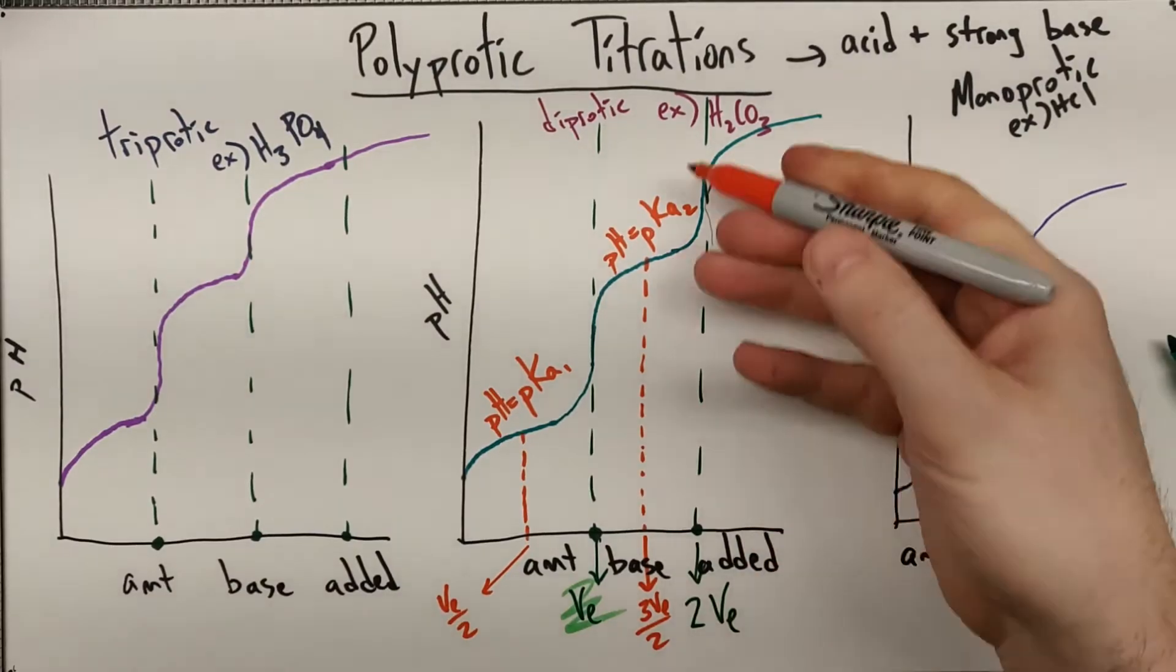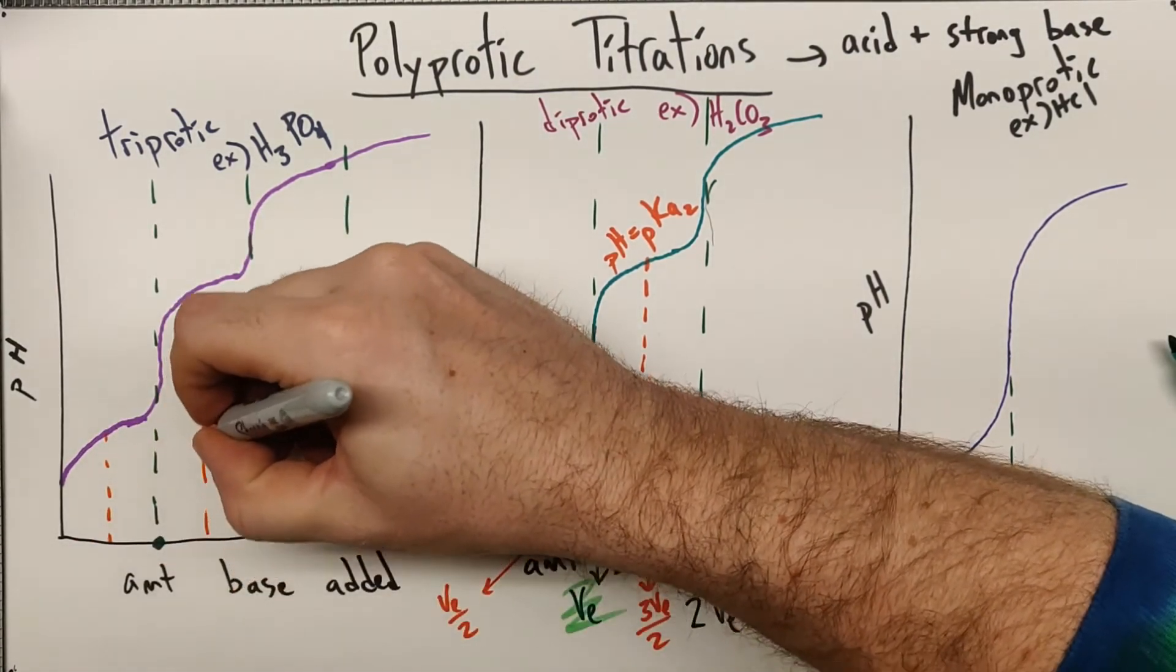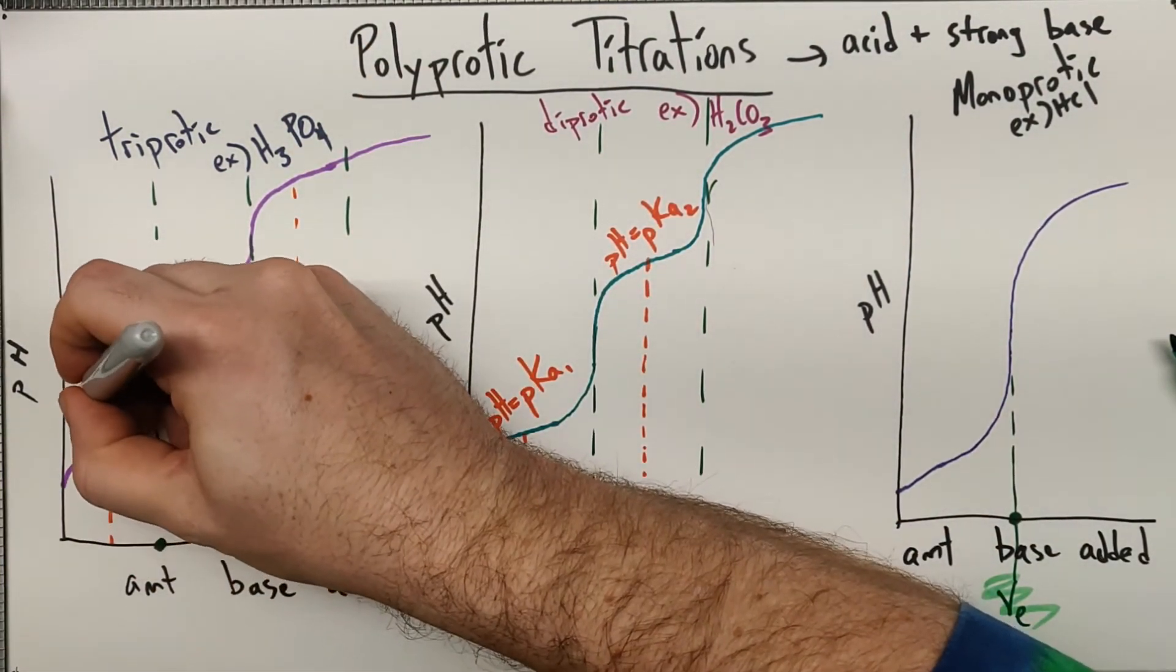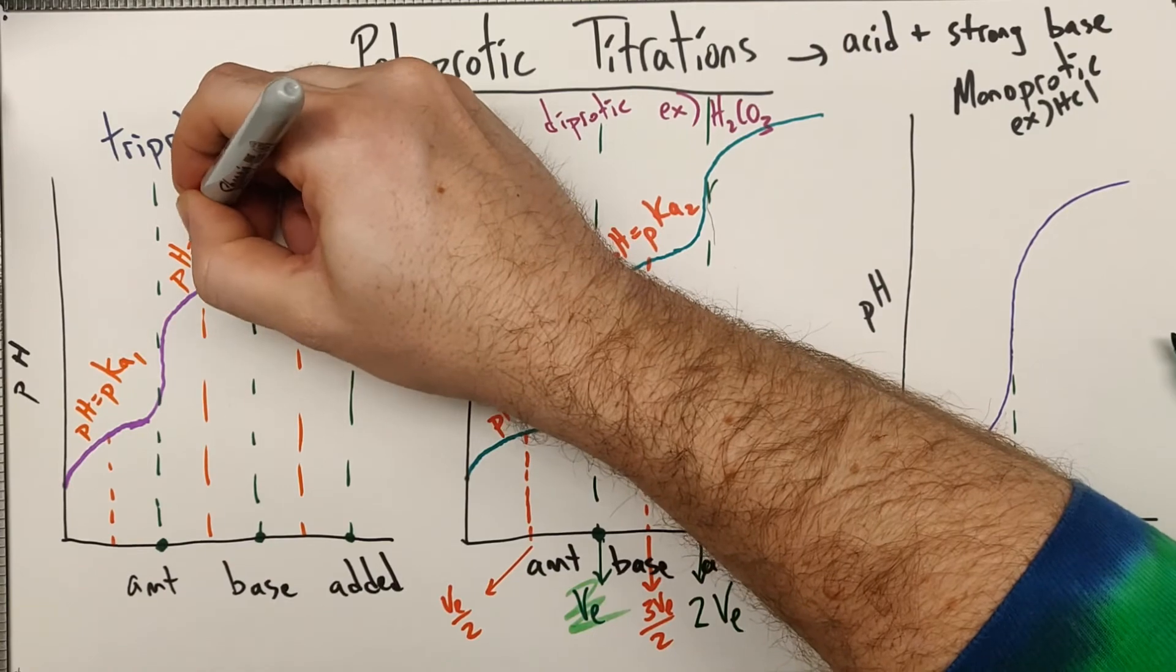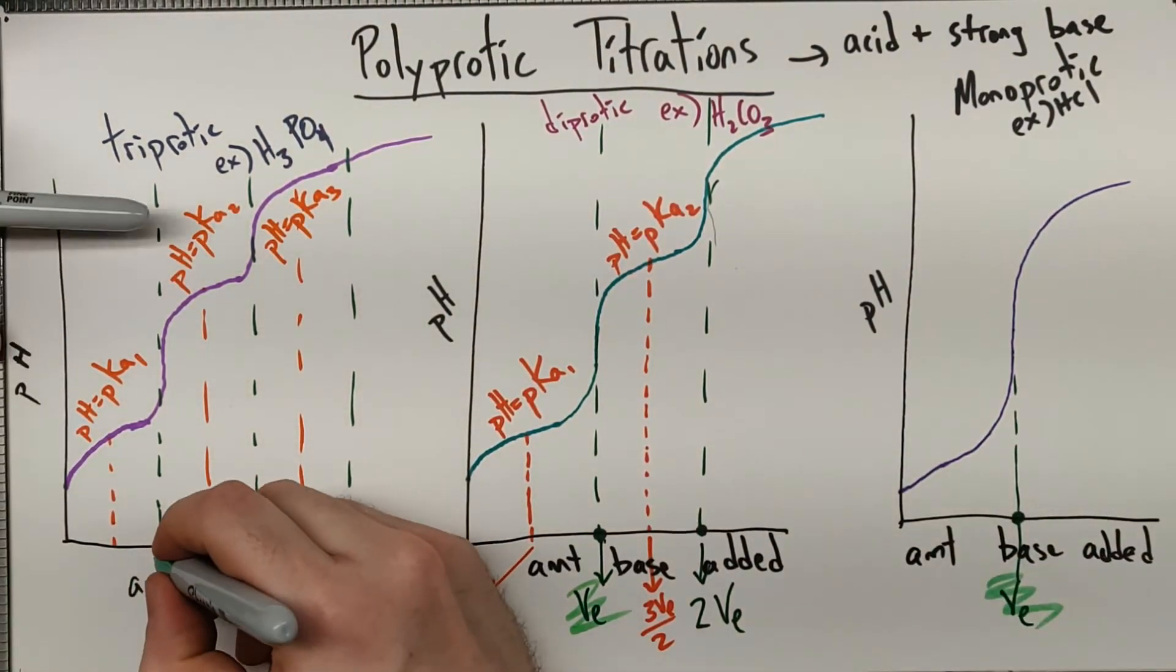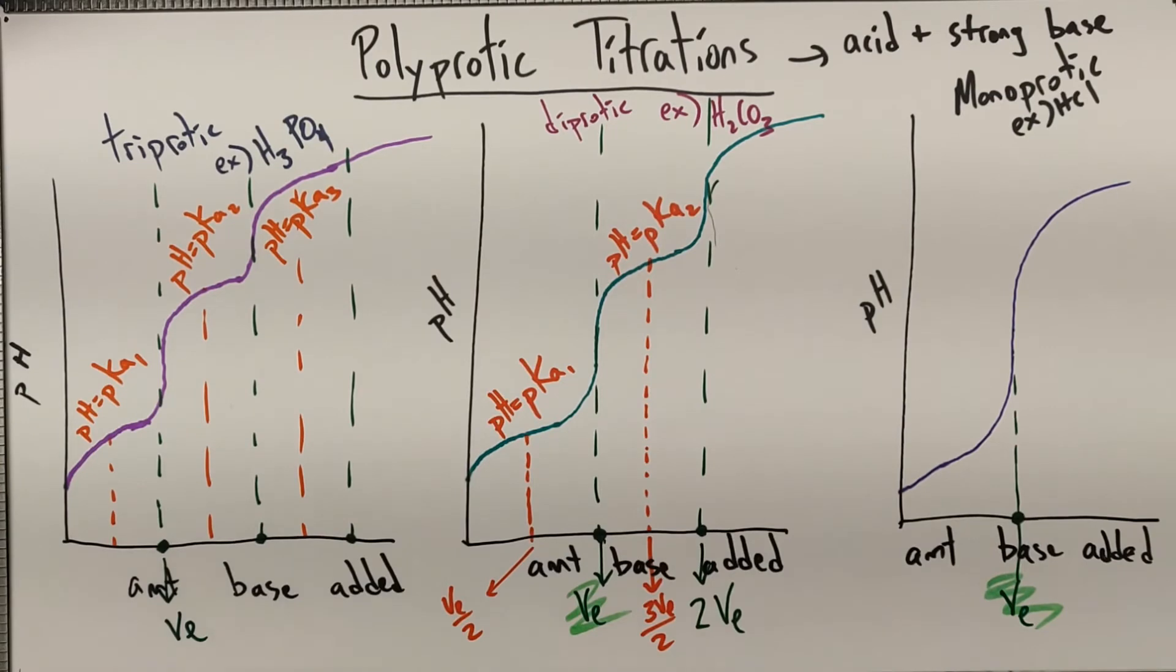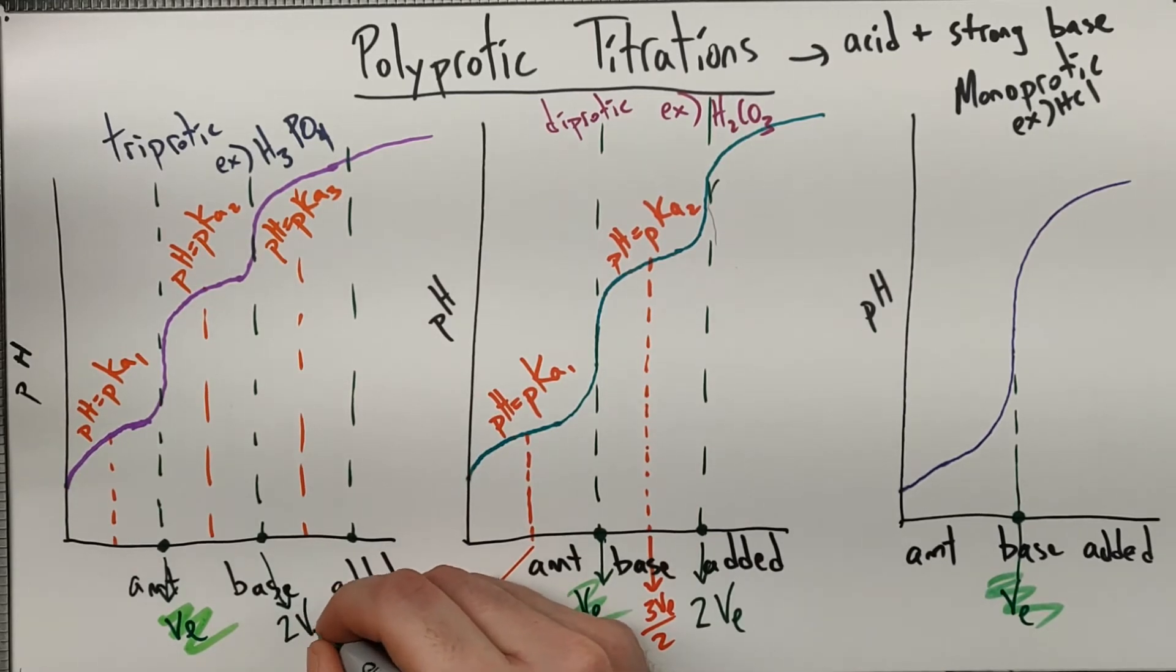Since we have these buffer regions and we just have three Hs to take off, this point, this point, and this point are most going to be of interest to us. Because we have pH equals pKa1 for the first, pH equals pKa2 for the second, and then pH equals pKa3 right there. And then in terms of volumes, this is the same equivalence volume that we had in both of those cases. This is, just as we saw before, two times the equivalence volume.